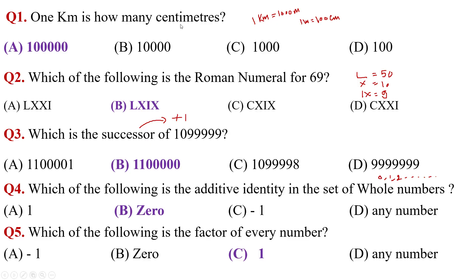One kilometer is how many centimeters? If any student knows how many meters in a kilometer, 1000, and how many centimeters in a meter, 100 centimeters. So when you calculate one kilometer is how many centimeters, it is 100000 centimeters.